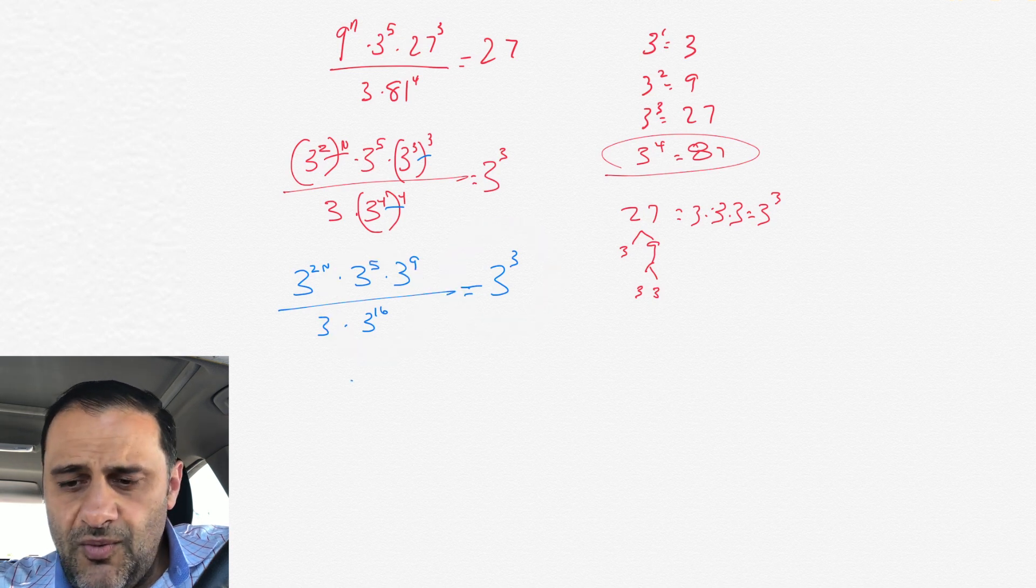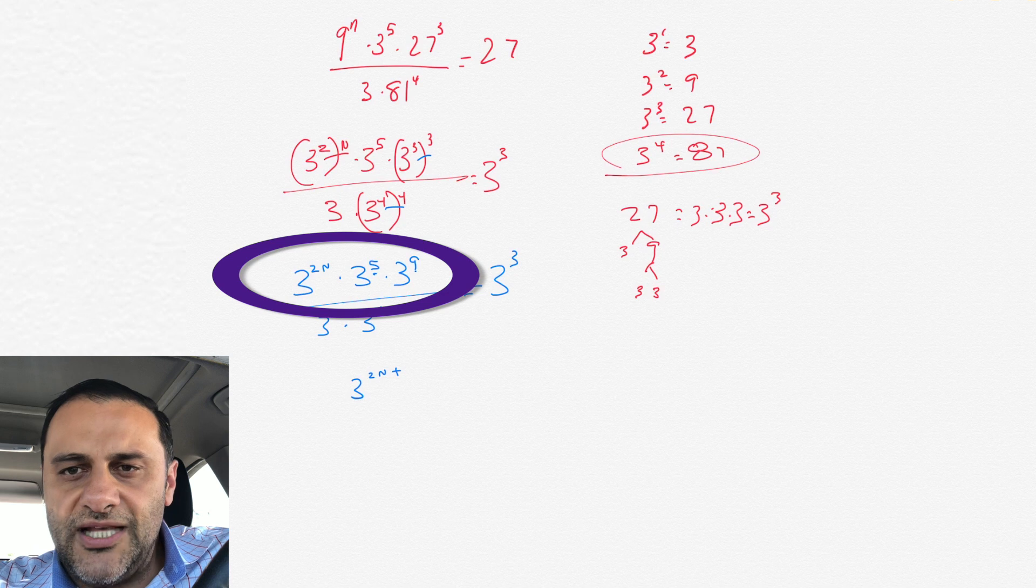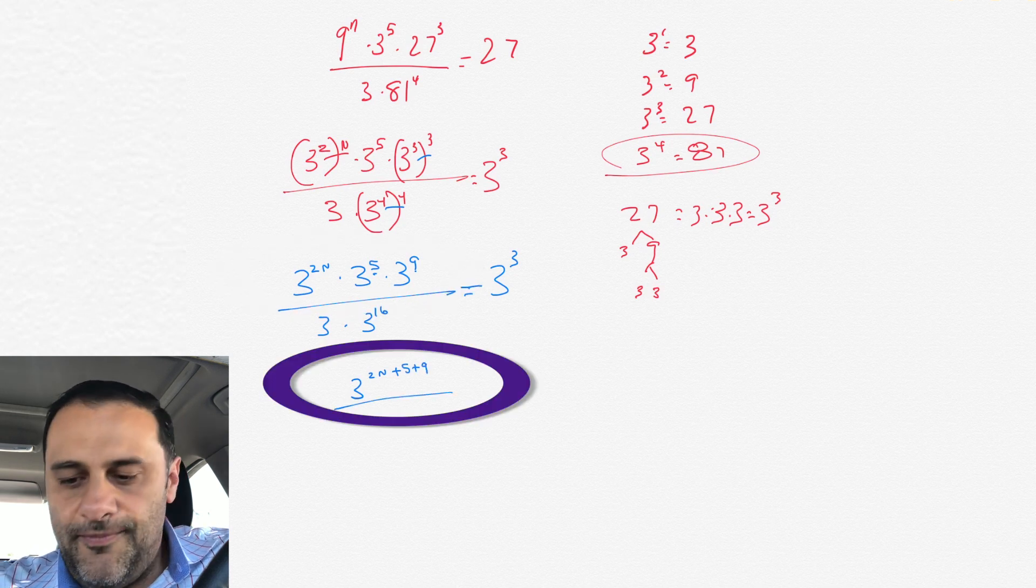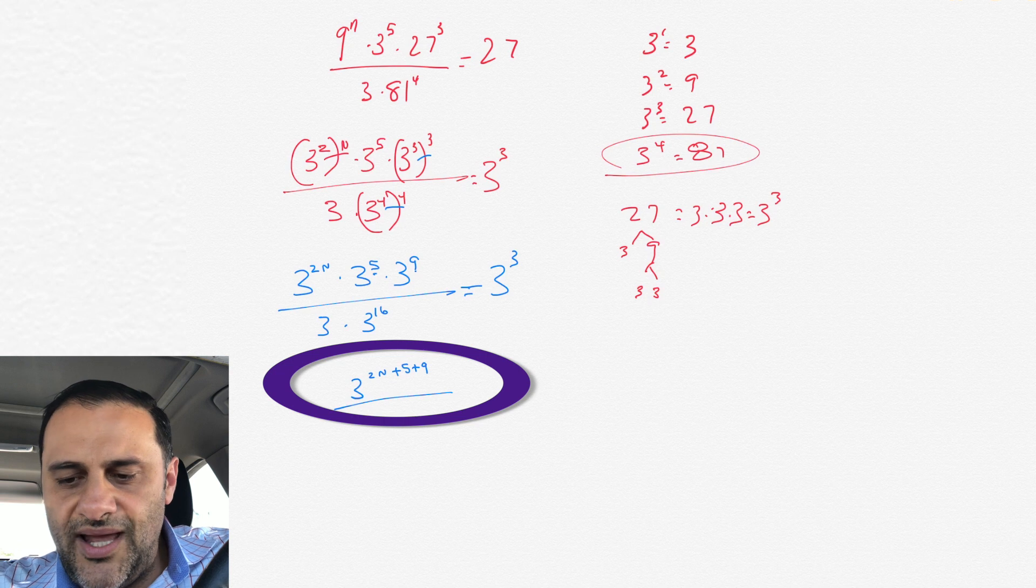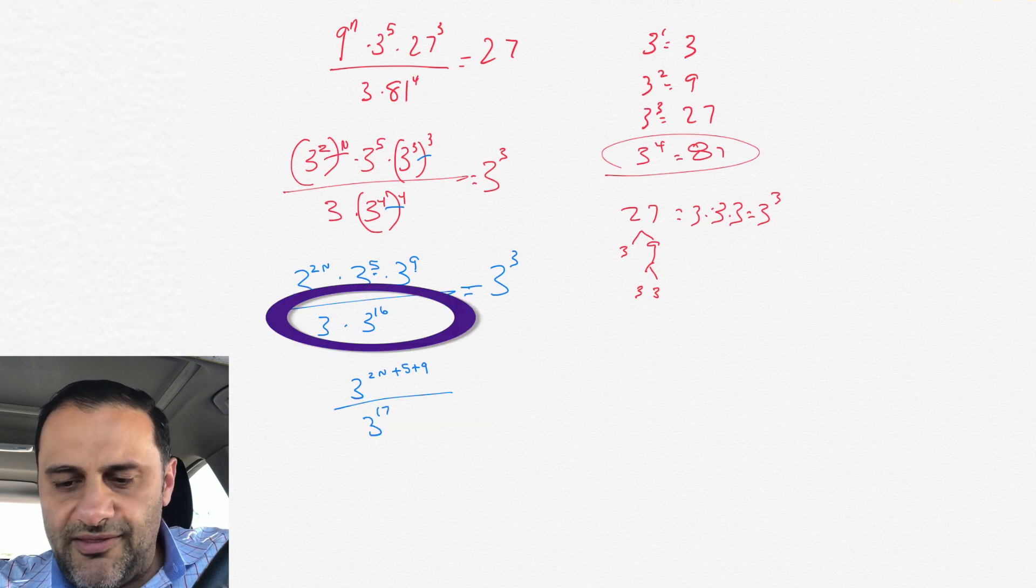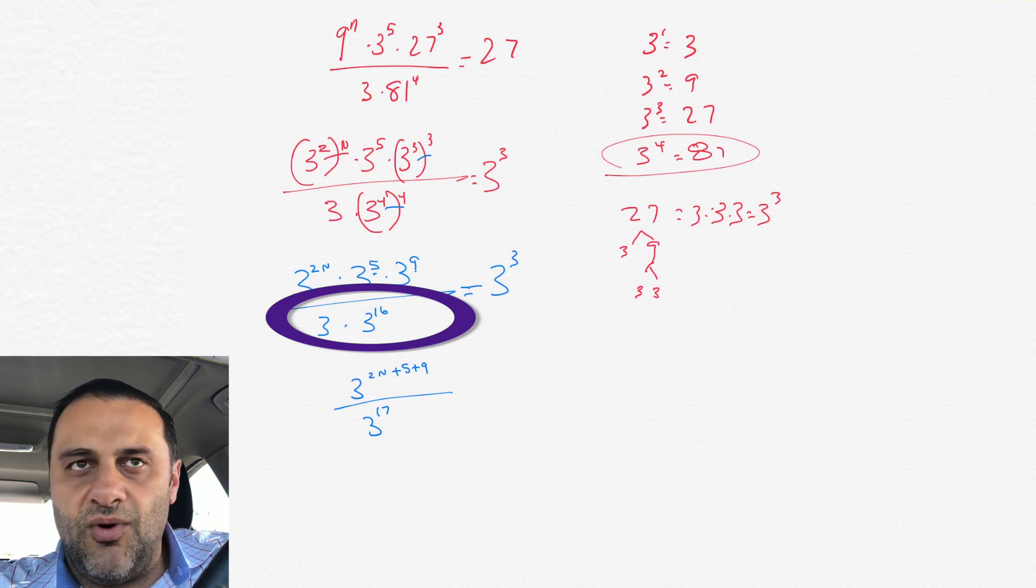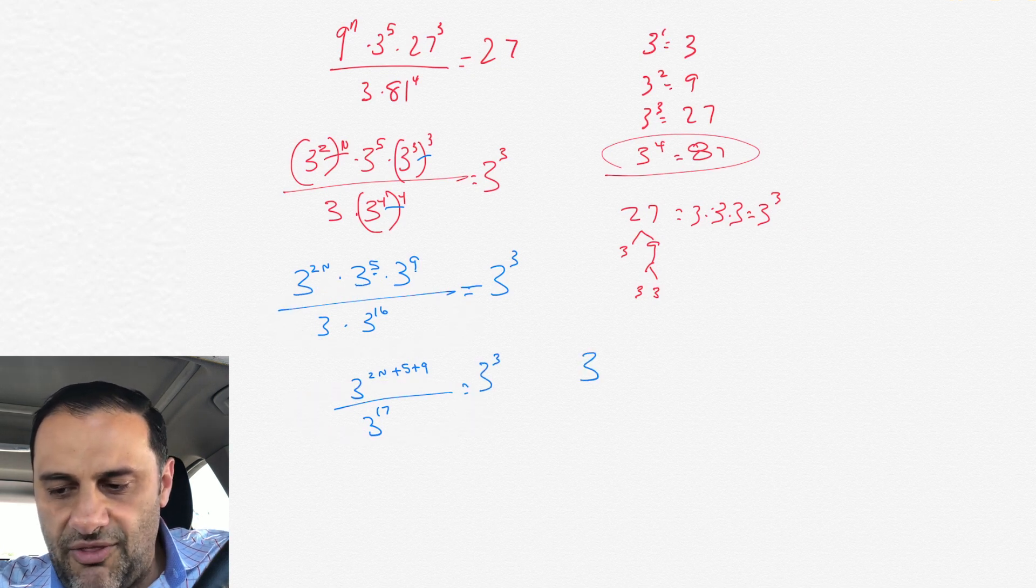Now what we need to do, when we have those exponents, when we're multiplying 3 to the 2n times 3 to the 5 times 3 to the 9, what we do with the exponents is we actually add them together. That's what we do when we're multiplying on the same base. So it would be 3 to the 2n plus 5 plus 9, and on the bottom, 3 times 3 to the 16. 3 is just like 3 to the 1, so we would have 3 to the 1, then we add 1 plus 16, which would be 3 to the 17, and then all that equals 3 to the 3.